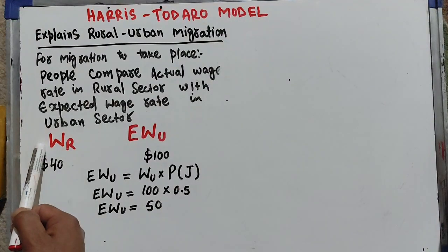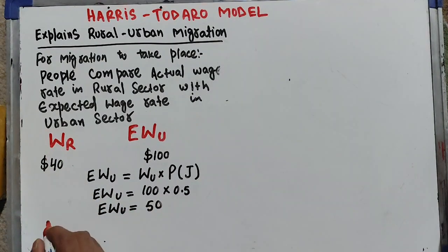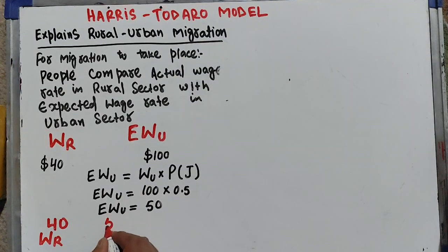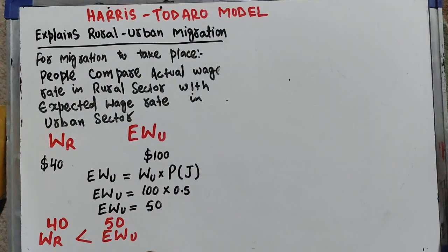People compare the actual wage rate with the expected wage rate of the urban sector. The actual wage rate in the rural sector is $40, and the expected wage rate in the urban sector is $50. Since the expected wage in the urban sector is greater than the actual wage in the rural sector, people will migrate from rural to urban.